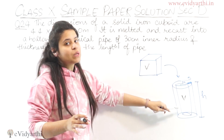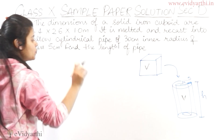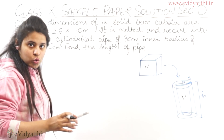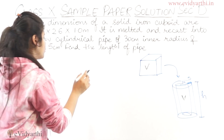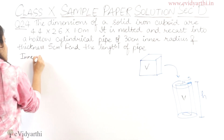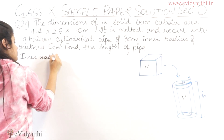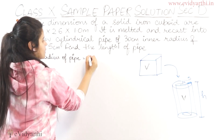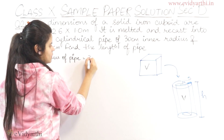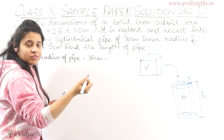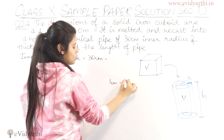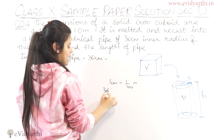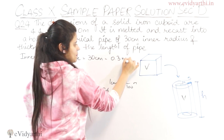The volume of the cuboid will be equal to the volume of the cylindrical pipe. The cylindrical pipe is hollow, so it has both inner and outer radius. The inner radius is clearly given as 30 cm. Converting to meters: 1 cm = 1/100 m, so 30 cm = 30/100 = 0.3 meters.